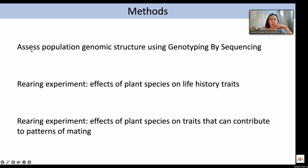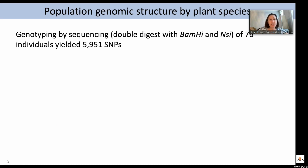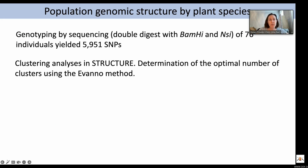What we did was we assessed population genomic structure using genotyping by sequencing. We did a rearing experiment that looked at the effects of plant species on life history traits, and we also tested plasticity in several traits that can contribute to patterns of mating. We used a double digest for genotyping by sequencing for 76 individuals, which yielded almost 6,000 SNPs. We did a clustering analysis in the program STRUCTURE and determined the optimal number of genetic clusters using the Evanno method.